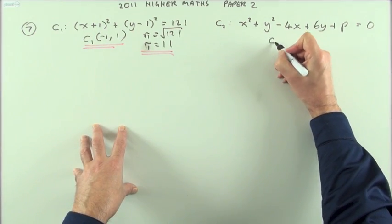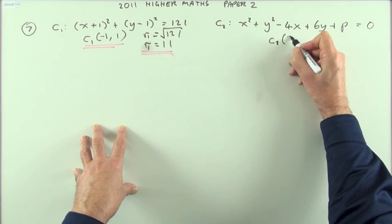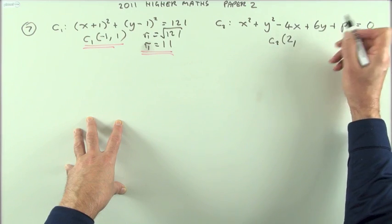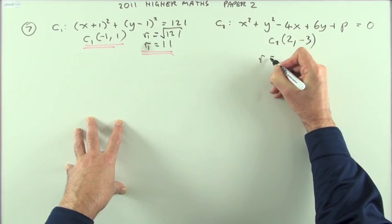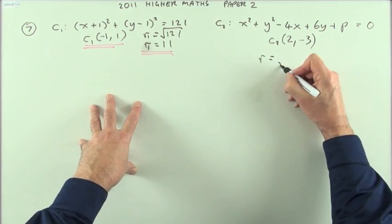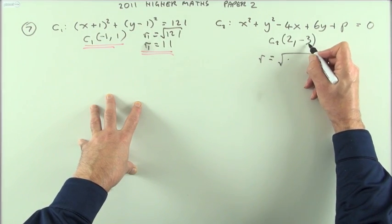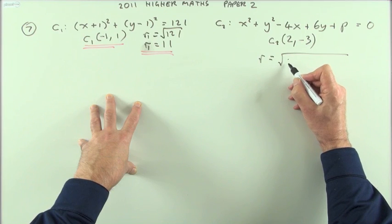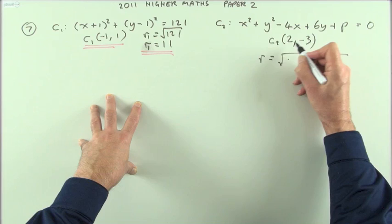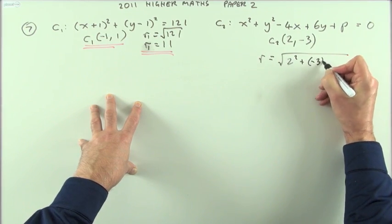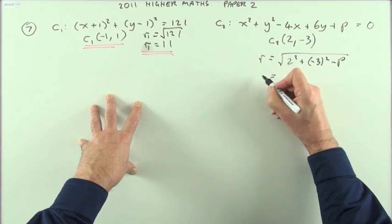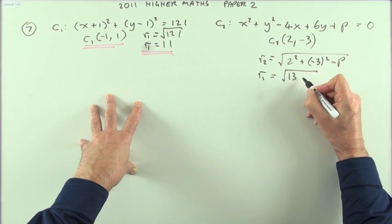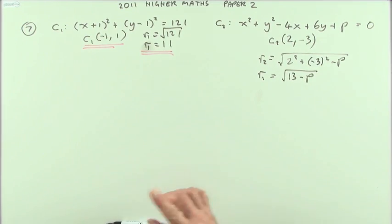For the second circle, the center coordinates have been doubled with opposite signs compared to the coefficients, giving center (2, −3). The radius is made up from the center squared minus the constant at the end: 2² + (−3)² minus p, which is 4 + 9 = 13, so the radius is √(13 − p). There's an unknown there.